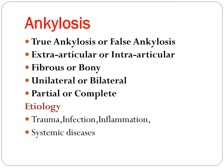Ankylosis of the TMJ is a fusion of the articular surfaces by fibrous or bony tissue — it can be unilateral or bilateral, partial or complete. The etiology includes trauma in childhood, infection, inflammation, and systemic disease.